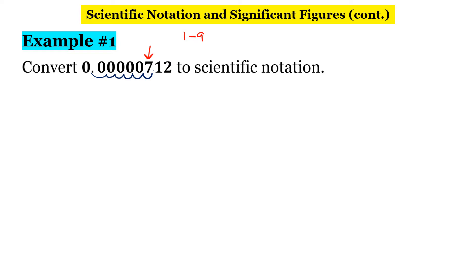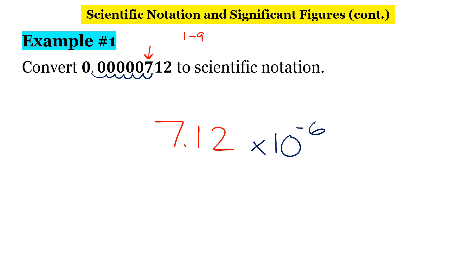So when we write this out, it's going to be 7.12 — we include all the numbers after the 7 — and then times 10. We moved the decimal place 6 times. This number is less than 1, so this will be times 10 to the negative 6.